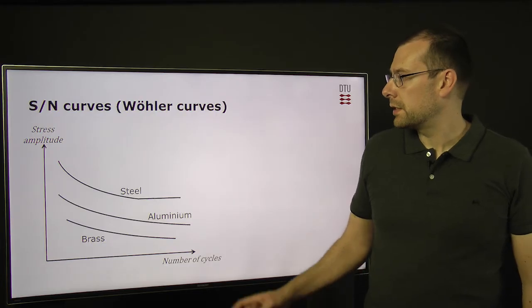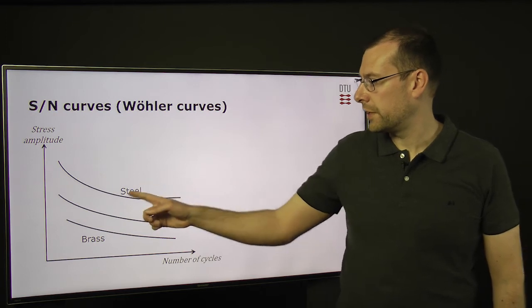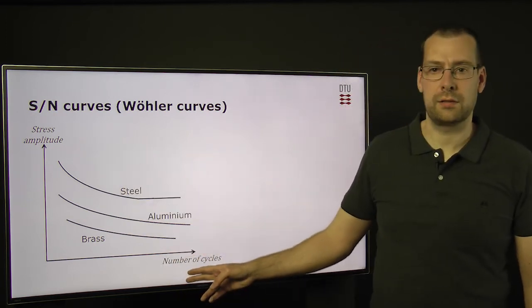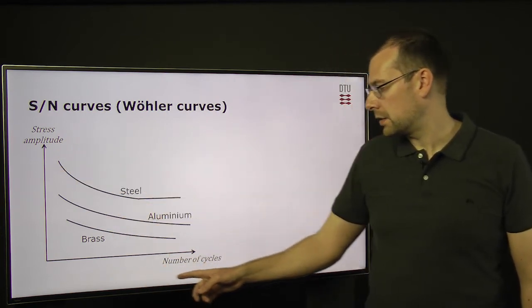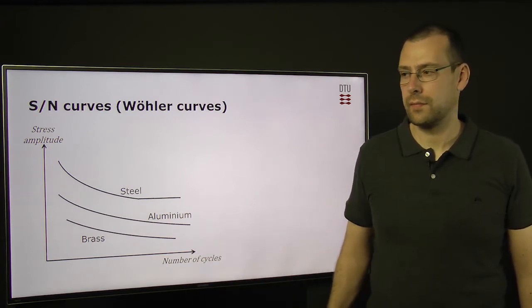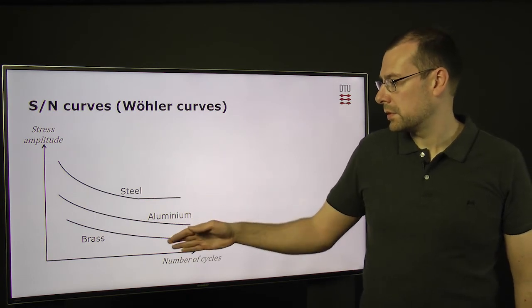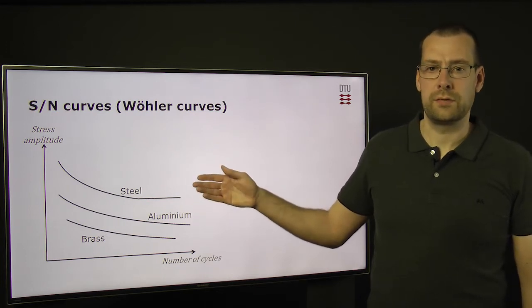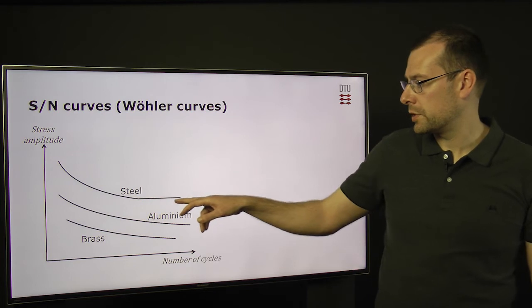So here we have SN curves and these indicate when a material will fail as a function of the stress amplitude and the number of cycles. So for example, if we have a lower stress amplitude, it will take a larger number of cycles until the component fails. Different materials have different curves and also different steels have different curves. But common for the steels is that they have a minimum threshold level.